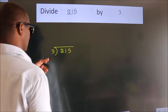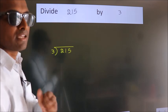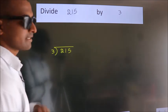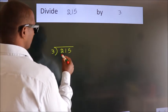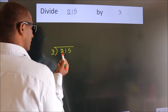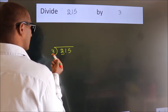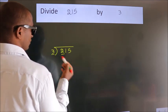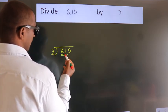This is your step 1. Next, here we have 2, here 3. 2 is smaller than 3, so we should take 2 numbers: 21.